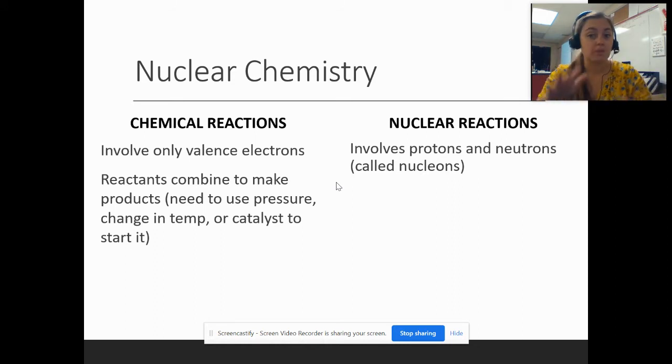Some reactants, you mix them and they'll just react right away. That doesn't always happen. So sometimes we do need to increase the pressure, increase the temperature, or maybe add a catalyst. A catalyst, just a fancy word for like a kickstart or a jumpstart, something that's going to force the reaction to start. So that's how chemical reactions occur.